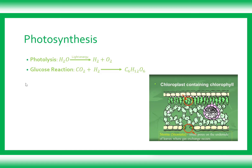The dark reaction, which is the glucose-forming reaction, does not need light. In it, carbon dioxide binds with the hydrogen molecule to form glucose. So, complete photosynthesis involves two reactions: first, water molecules absorbed from the soil are split by light energy into hydrogen and oxygen; then that hydrogen is used to form glucose.